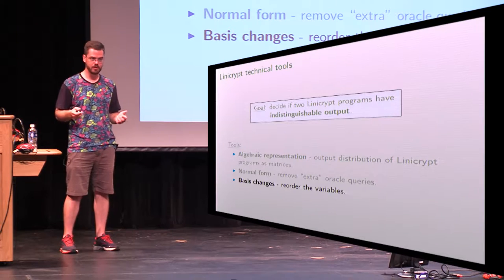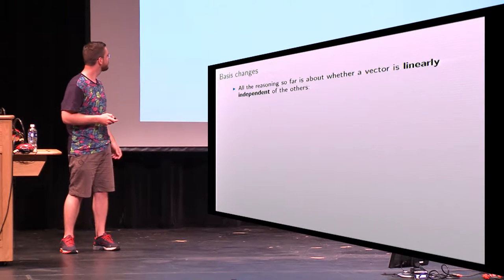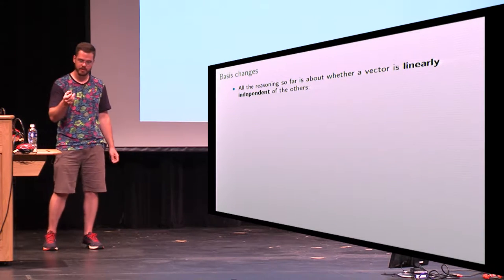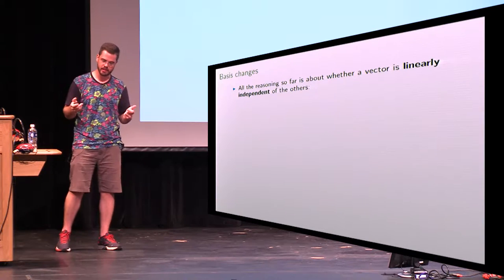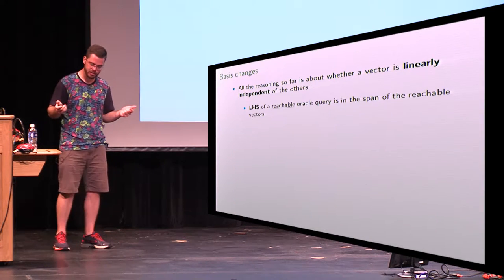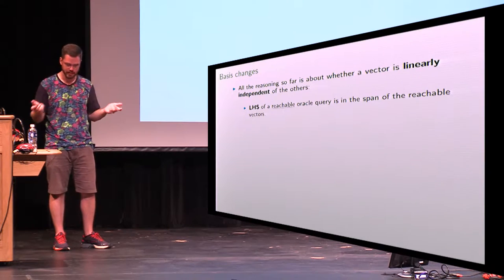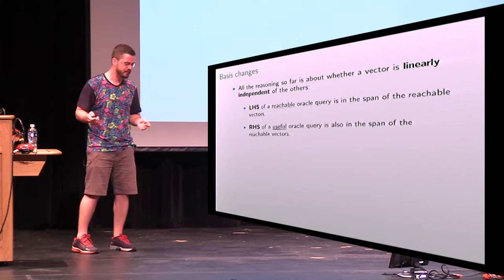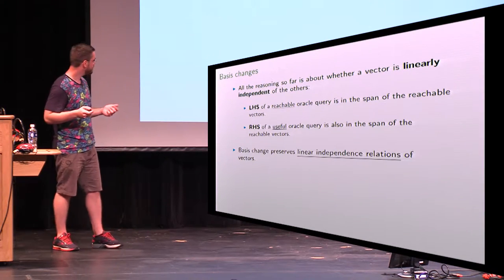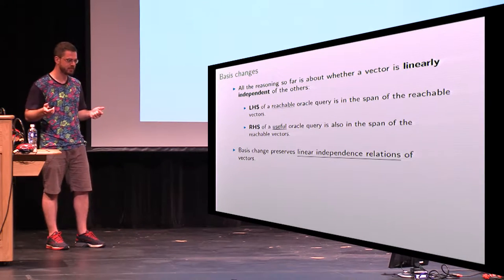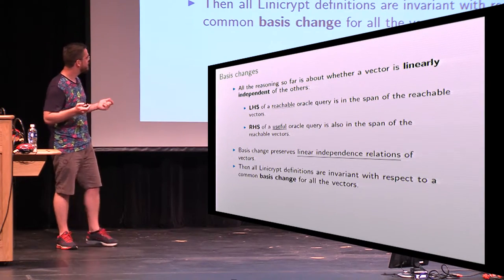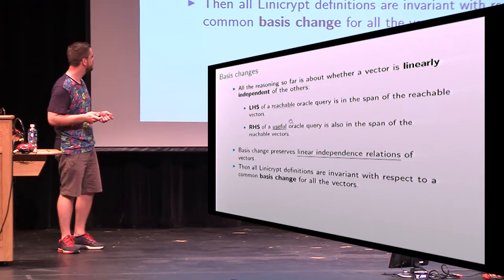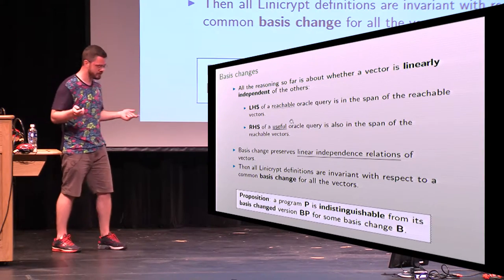Next I'll show you how to reason about reordering the variables. Everything so far talks about whether a particular vector is linearly independent of everything else — the left-hand side of a reachable oracle query is in the span of everything, and the right-hand side of a useful oracle query is also in the span of everything. A basis change preserves these linear independence relationships, so we can take a basis change on all of them and preserve all the LinnyCrypt properties. We show that this is the case.